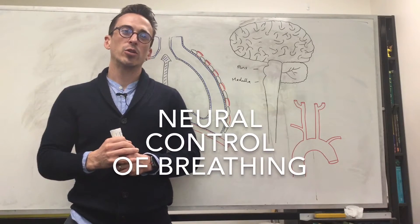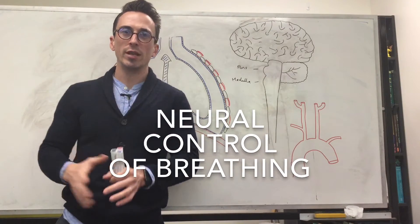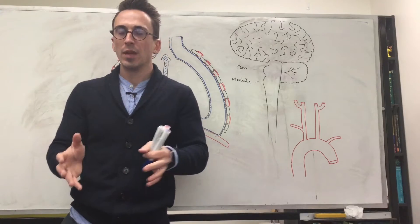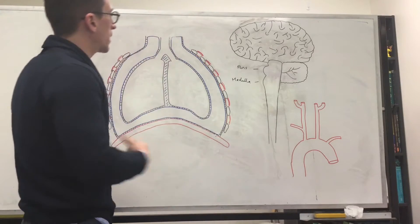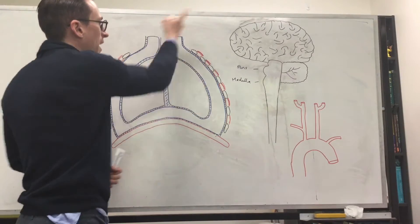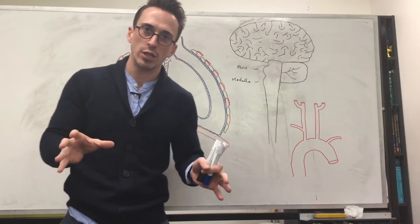Hi everyone, Dr. Mike here. In this video we're going to talk about neural regulation of breathing. This is how does the brain control our respiratory rate. So first thing you need to be aware of is the fact that we've got our lungs here and we know that we need to bring air into our lungs and back out of our lungs and the way that we do this is because of pressure changes.